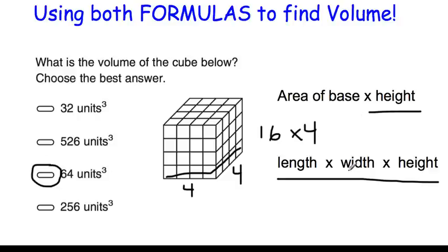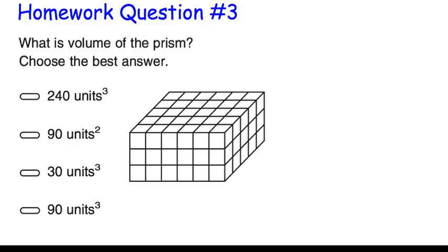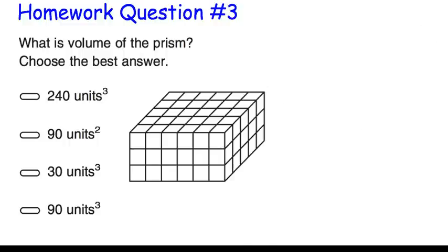You might see both of these different kinds on your MCA test. Know that if you see area of base times height, that is used to find volume, and length times width times height is also used to find volume. Homework question 3: find the volume of this prism and choose the best answer.